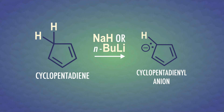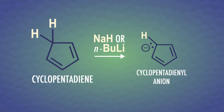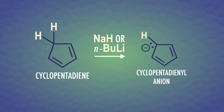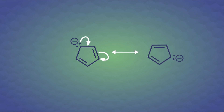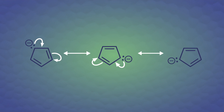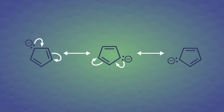The cyclopentadienyl anion is an aromatic ion too. A strong base can deprotonate cyclopentadiene, putting a pair of electrons into a p-orbital. The anion that results is cyclic, planar, has a continuous series of p-orbitals, and has 6 pi electrons.